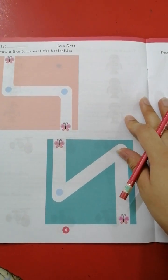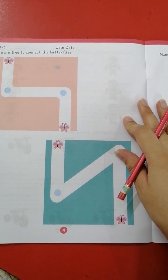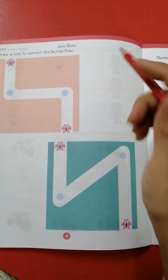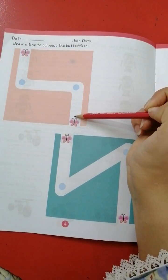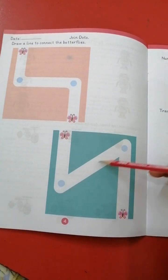On next page we have to draw a line to connect the butterflies. You have to draw a line to connect butterflies, both of them.